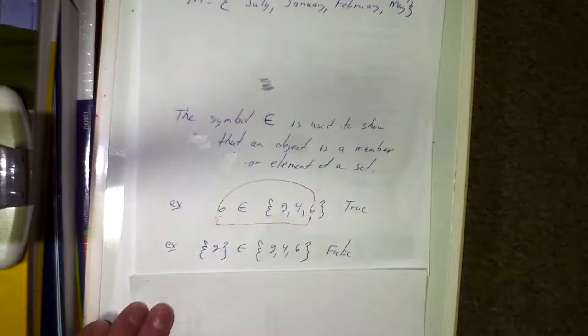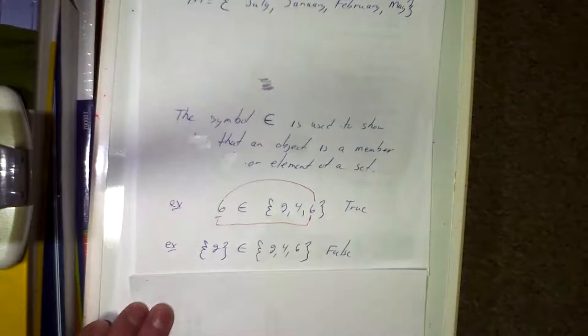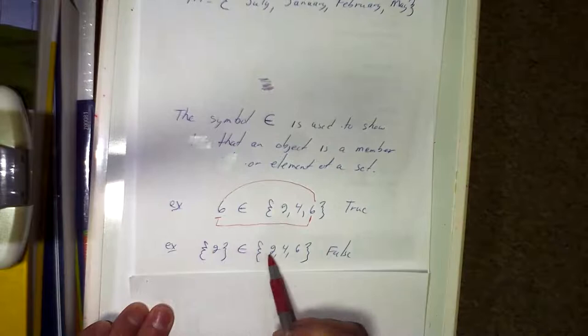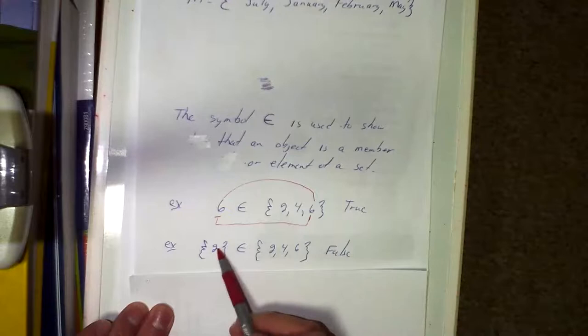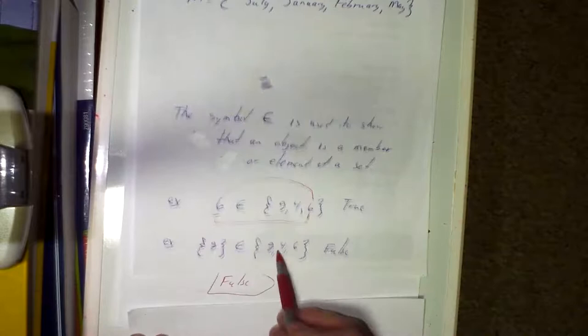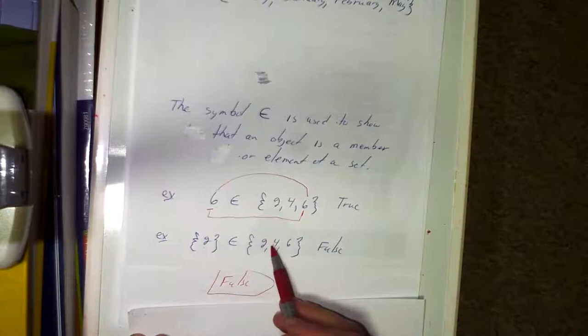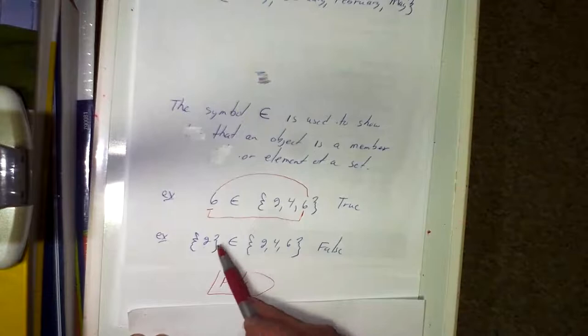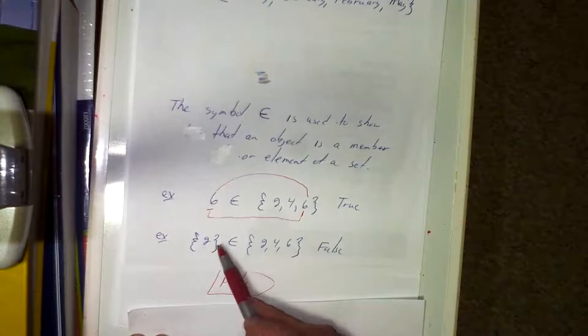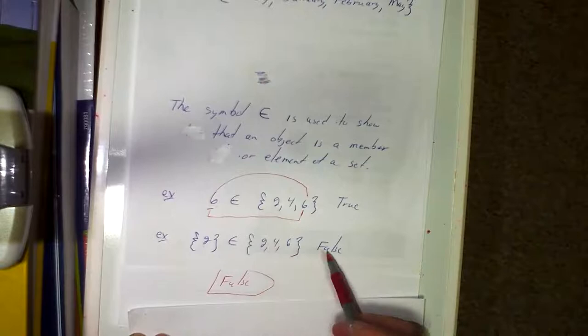However, if you have the set {2} — enclosed in braces — is the set {2} an element of {2, 4, 6}? No, it's false. This is not a single object; it is a set. That set is not inside this set. If an element on the left side has braces, it's always going to be false — it can't have braces.